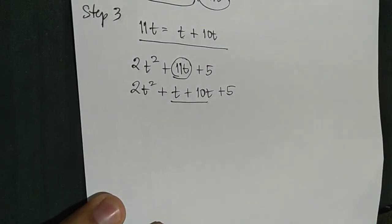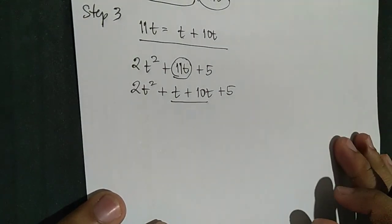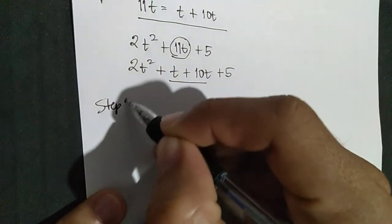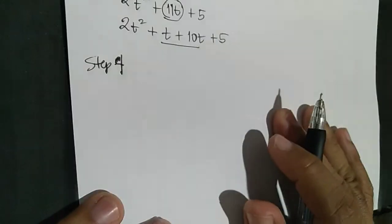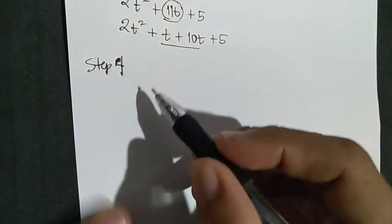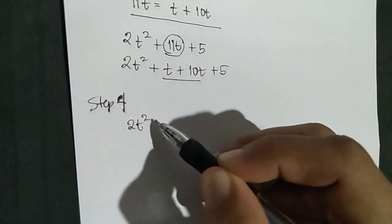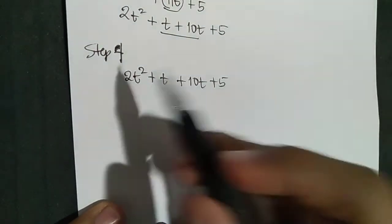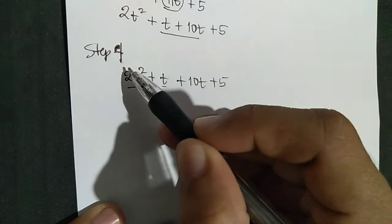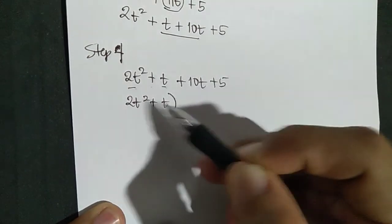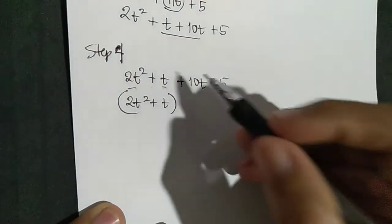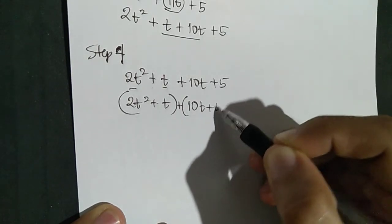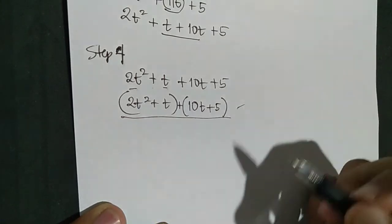Step 4: group the first two terms and the last two terms together. Copying from Step 3: 2T squared plus T plus 10T plus 5. Group the first two terms — 2T squared plus T — then group the last two terms together: 10T plus 5.